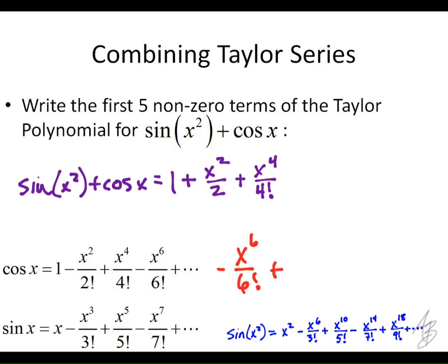I have x to the 6th, this is a negative x to the 6th over 6 factorial plus x to the 6th over 3 factorial. What do I do to get a common denominator? I need to multiply this by 6 times 5 times 4, which is 120. So it's going to be 120 times x to the 6th over 6 factorial minus 1 over 6 factorial, which would be 119 x to the 6th over 6 factorial.